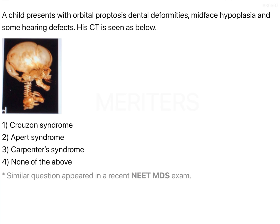There are 2-3 clues in this question. One is orbital proptosis — that is the main clue. Orbital proptosis is one clue, then dental deformities, mid-face hypoplasia, and some hearing defects. In the CT, you can see a cloverleaf skull — a very cloverleaf-shaped skull.